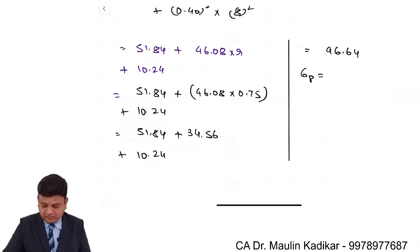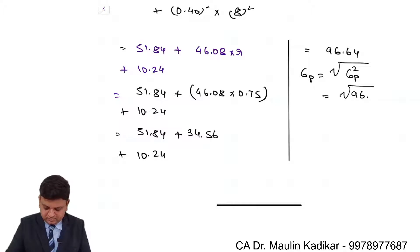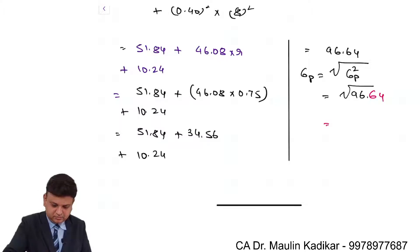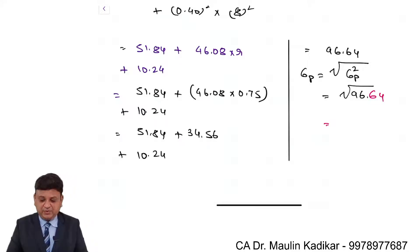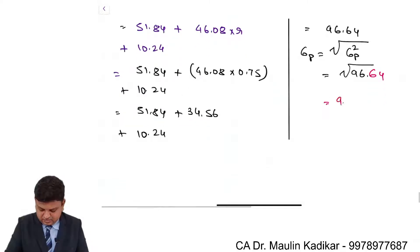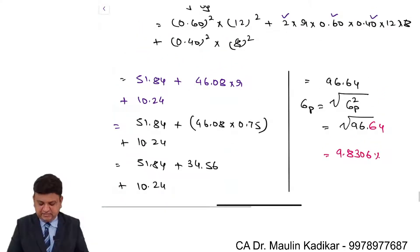Finally, the standard deviation of the portfolio is the square root of the variance. So σ_p = √96.64 = 9.8306%. That is the standard deviation of the portfolio for Mr. P.